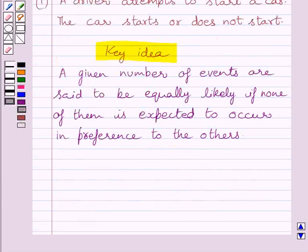Let us now start with the solution. Now, the given experiment is, a driver attempts to start a car. The car starts or does not start. Now, total number of possible outcomes is equal to 2.